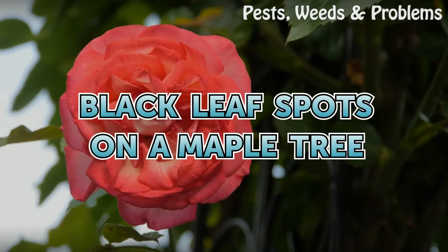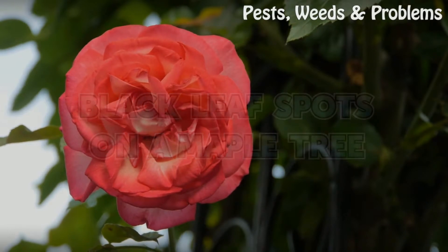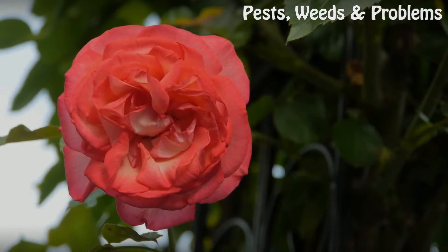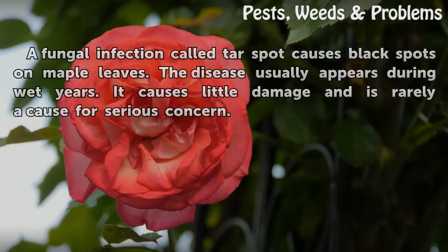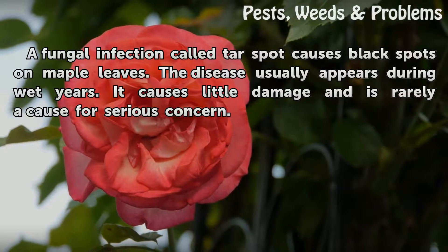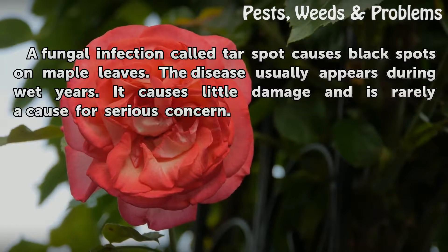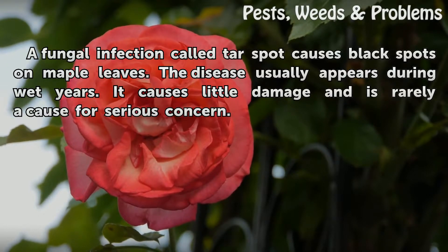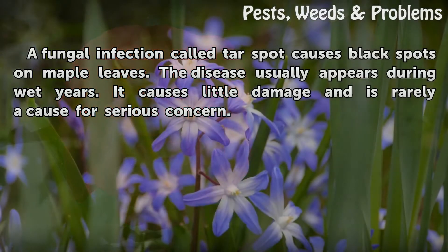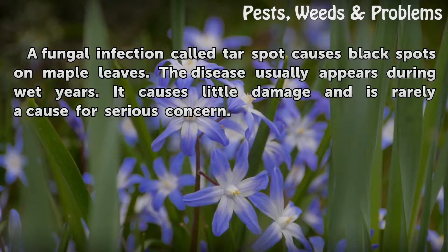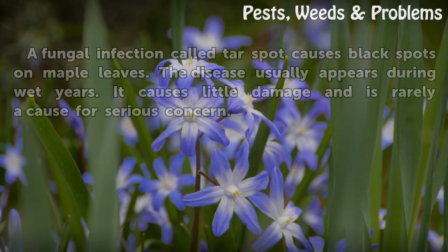Black leaf spots on a maple tree are caused by a fungal infection called tar spot. The disease usually appears during wet years, causes little damage, and is rarely a cause for serious concern.